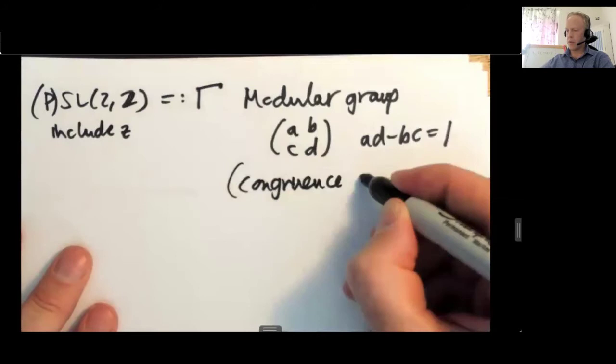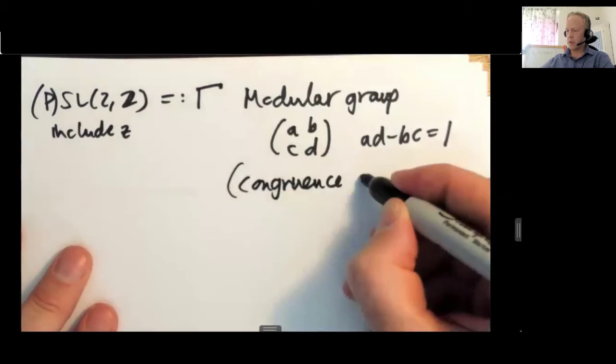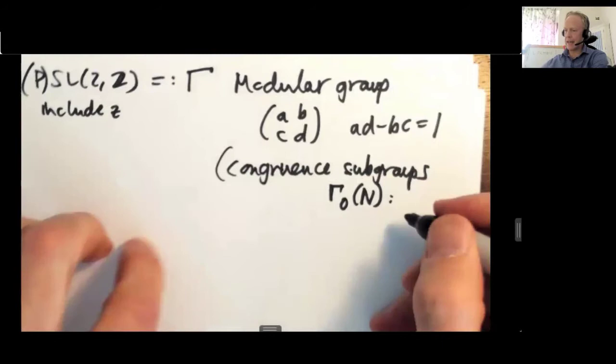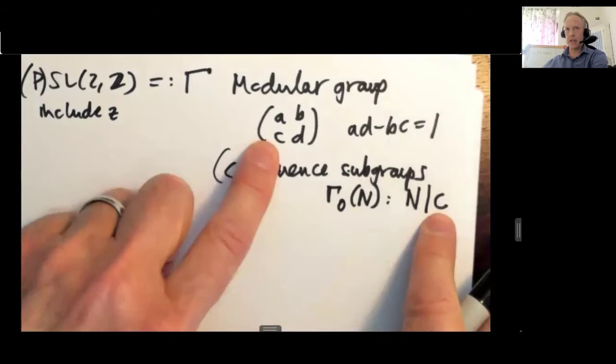There are famous subgroups, like the congruence subgroups, that are highly relevant for orbifold. So if you're in a ZN orbifold, you might actually naturally encounter a congruence subgroup. The only condition is that N divides C. So this entry is C in the matrix. If N divides C, then that's a subgroup of this original group.